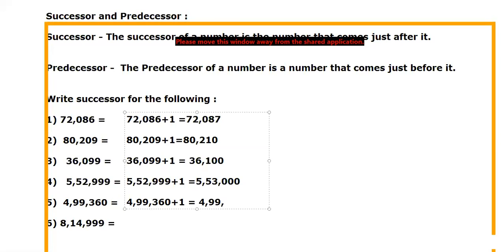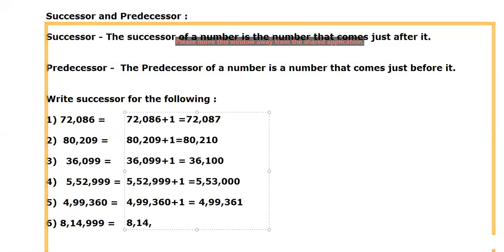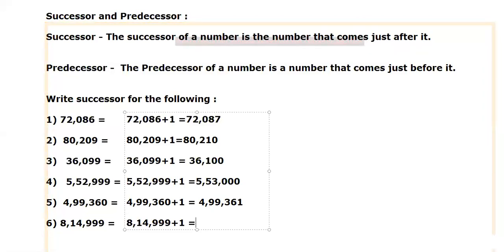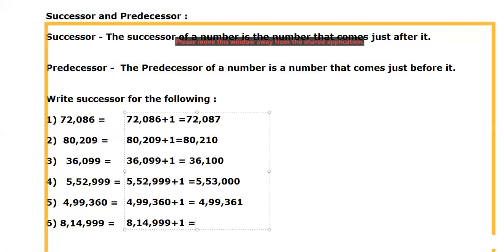Now see, last question also I given in nines. 8,14,999, so 999 after what will come? Thousand. Already here I have 14,000, so what number will come? Yes, after 14,000 we have 15,000. Very good. So the answer is 8,15,000.